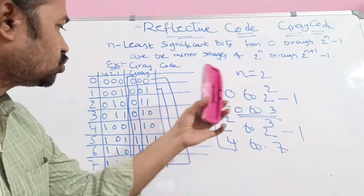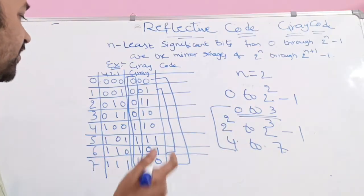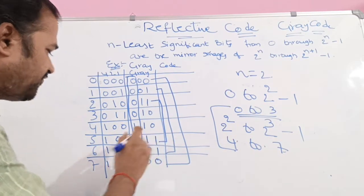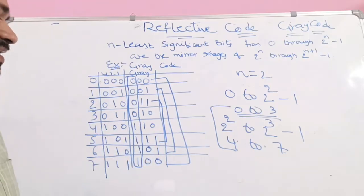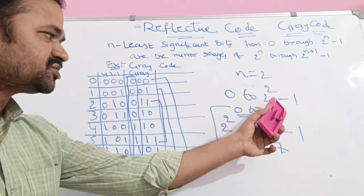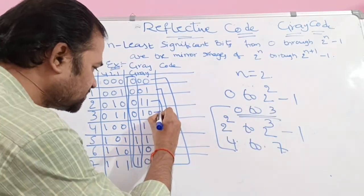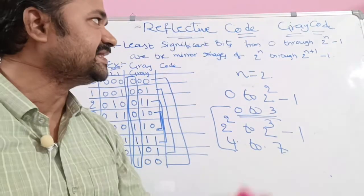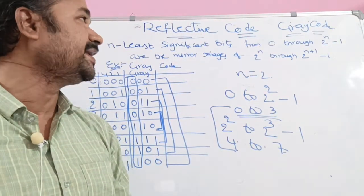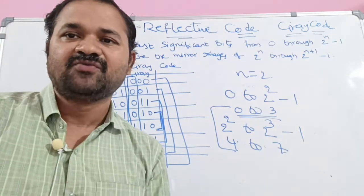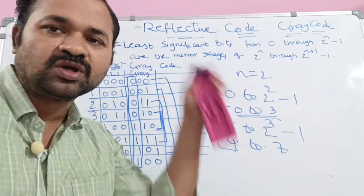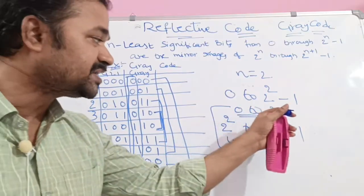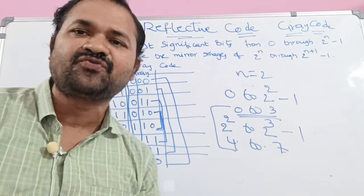Next, 2 and 5 are mirror images — both have the 2-bit pattern 11. Then 3 and 4 are mirror images — both have the pattern 10. That's why we say Gray code is a reflective code: because 0 through 3 are the mirror images of 4 through 7.